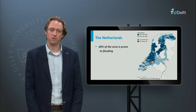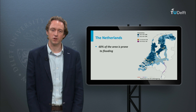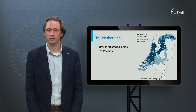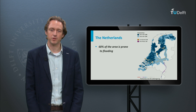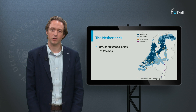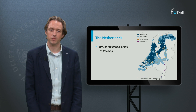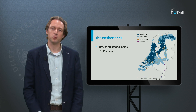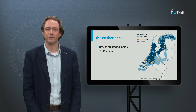Examples are the floodplains of the rivers and the port expansion of Rotterdam, the Maasvlakte. This is raised about 5 metres above sea level to prevent flooding.